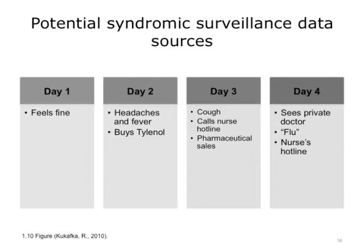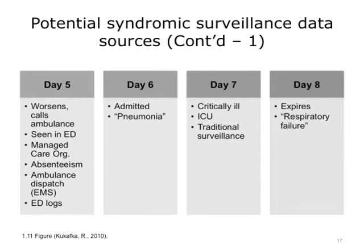The way that data is collected for surveillance systems will vary. At day one, when an agent might be released, individuals typically feel fine. By day two, symptoms begin — the patient may experience headache and fever and go to the drugstore to buy over-the-counter medications such as Tylenol. On day three, there may be onset of cough, and the patient might call a nurse hotline. Day four, the patient decides to see a doctor. On day five, the condition worsens and the patient might call an ambulance, report sick, or be seen in the emergency department. All these events may be monitored by syndromic surveillance systems, compared to events on days seven and eight, which are monitored by traditional surveillance systems.